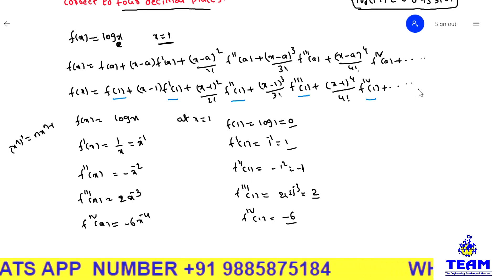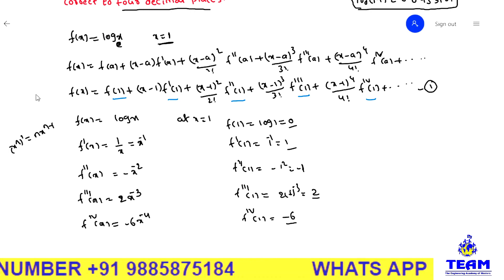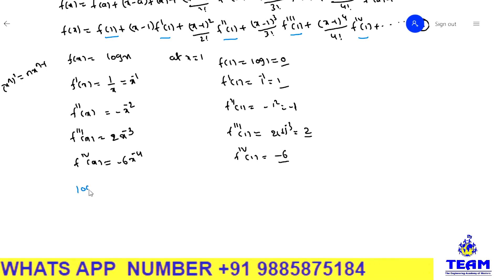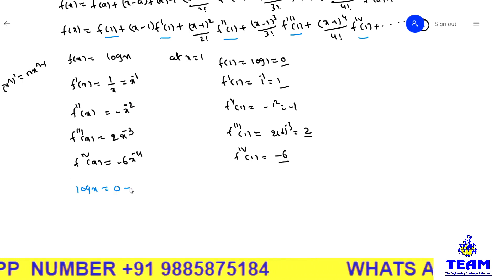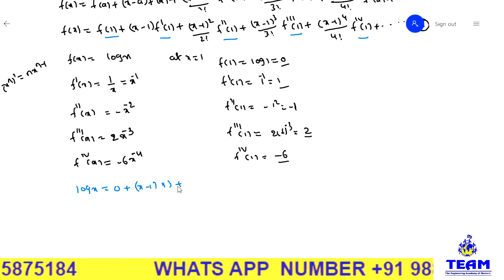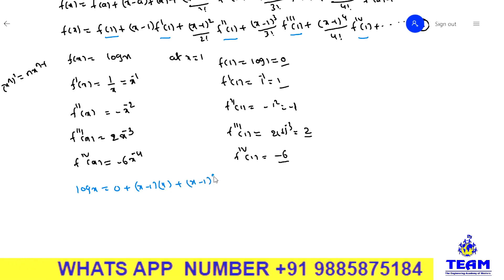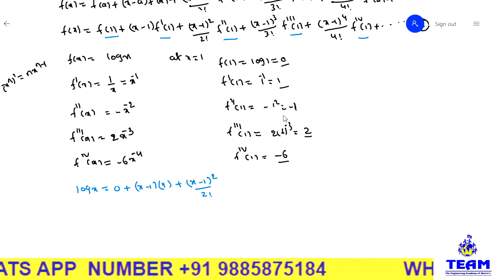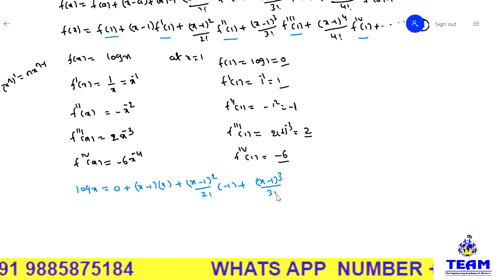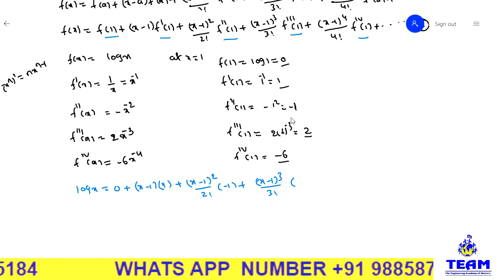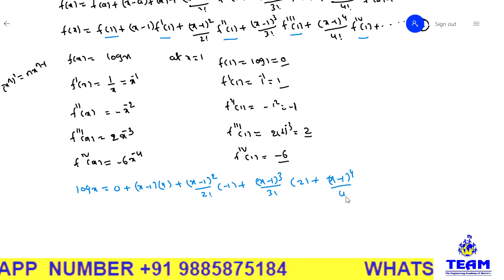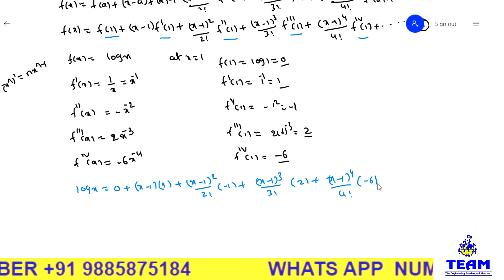Now we substitute all these values into equation (1). So log(x) = 0 + (x−1)·1 + (x−1)²/2! · (−1) + (x−1)³/3! · 2 + (x−1)⁴/4! · (−6) + and so on.